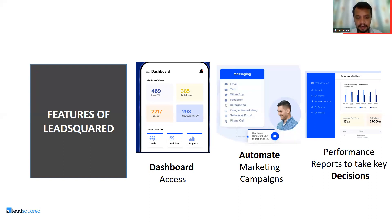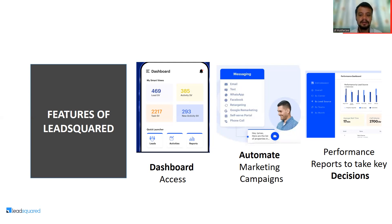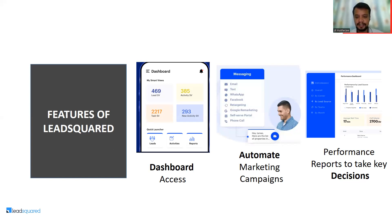The second feature is automated marketing campaigns. As visible on the screen, LeadSquared supports different marketing channels: email, text, WhatsApp, Facebook retargeting, Google marketing, self-support, and phone calls — all the channels through which companies target consumers to buy their products.